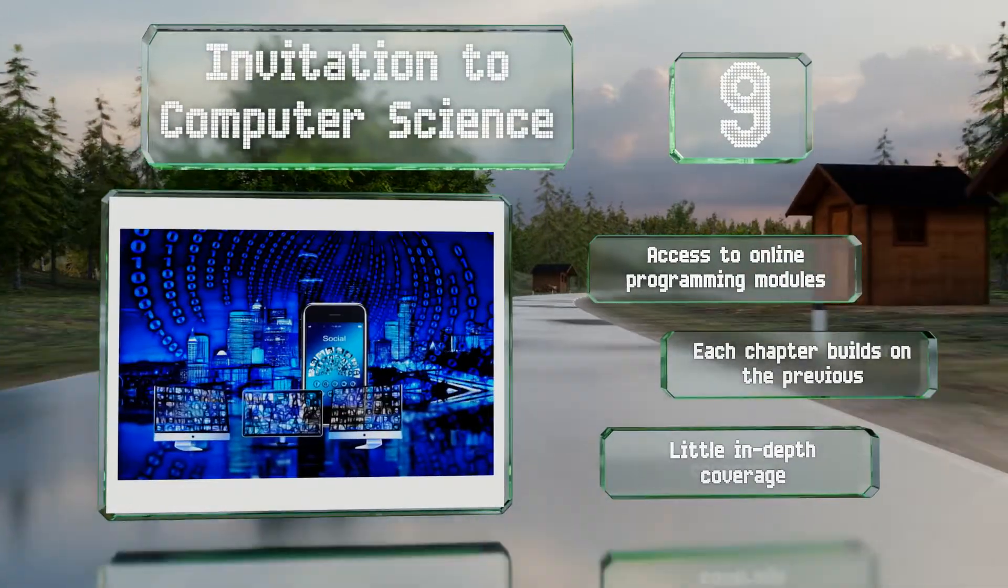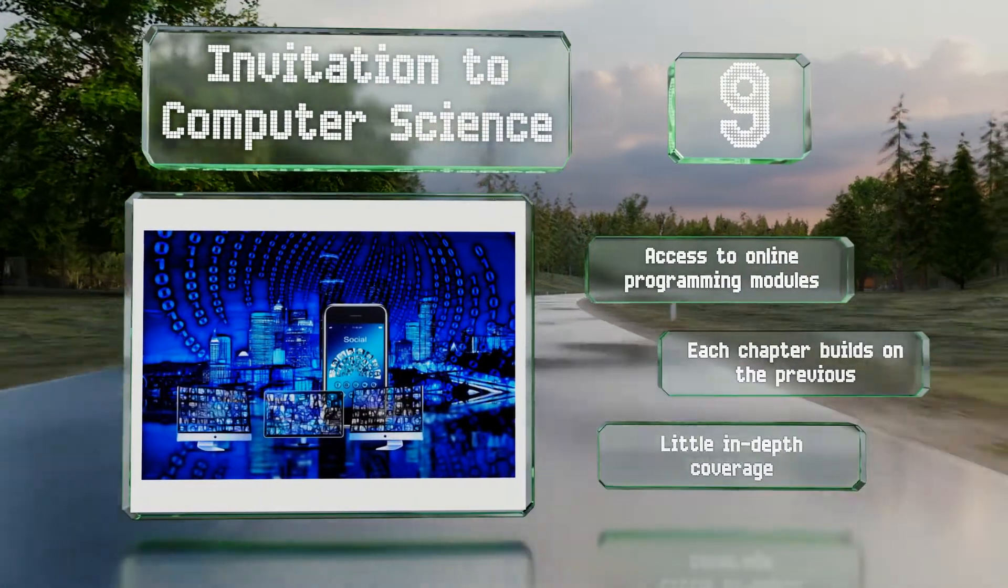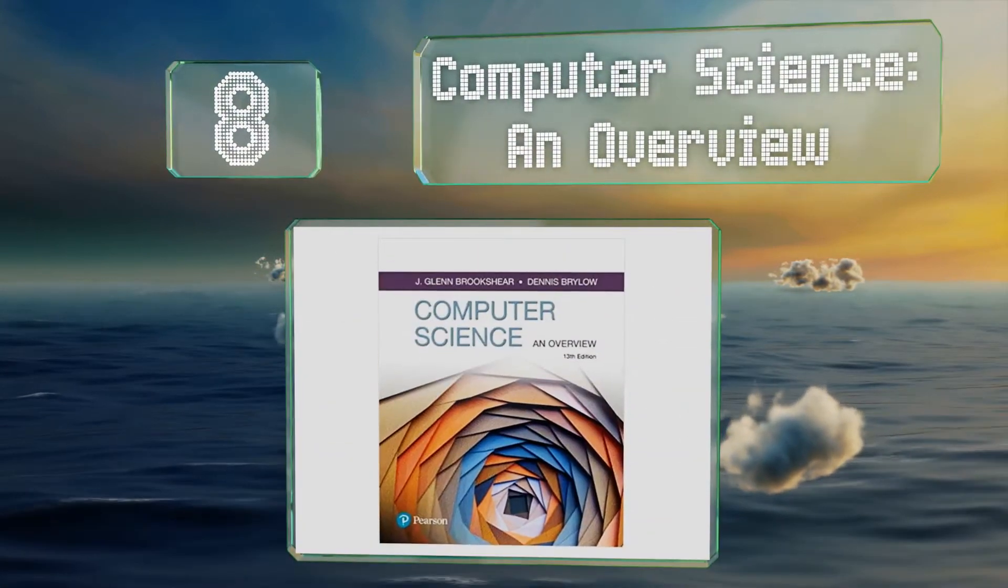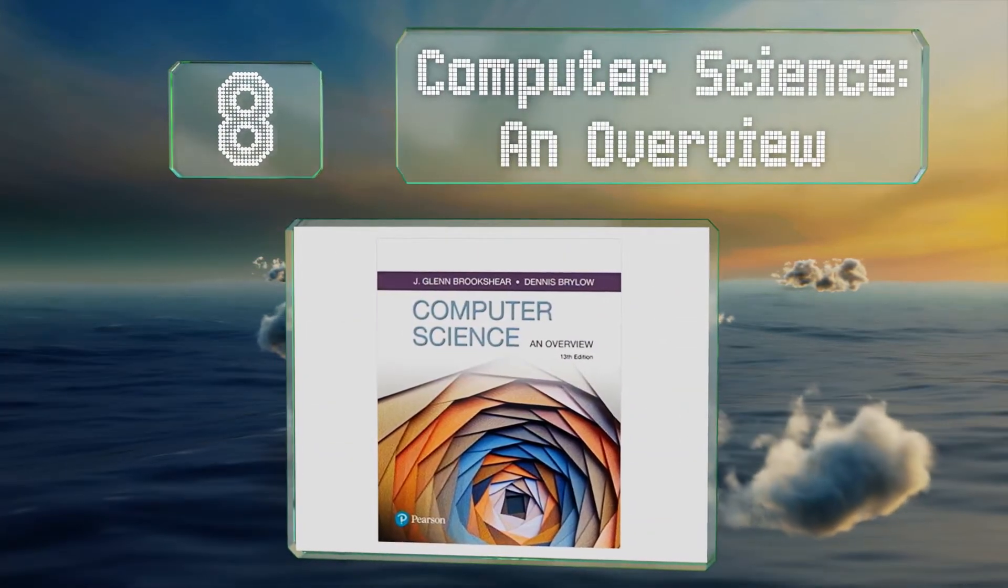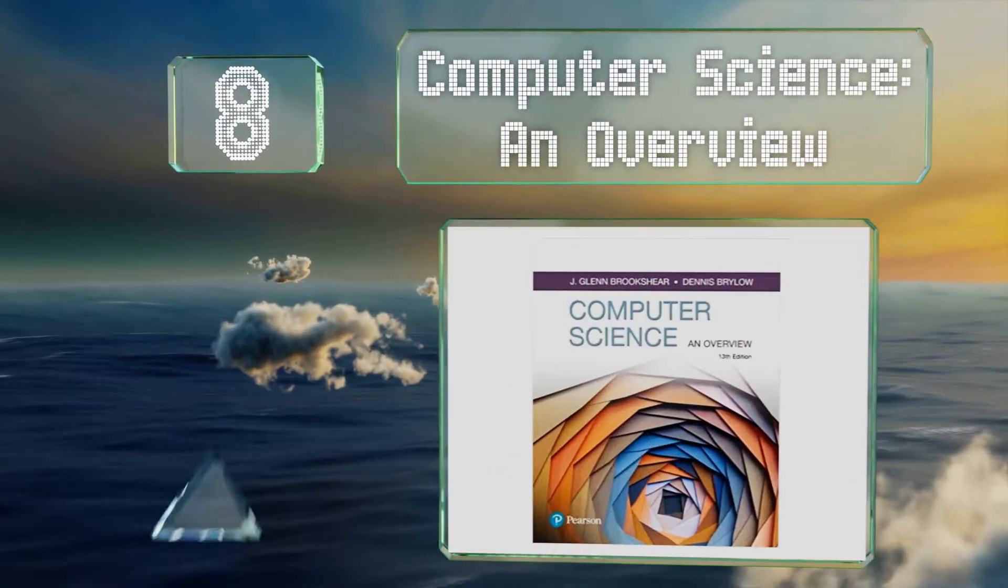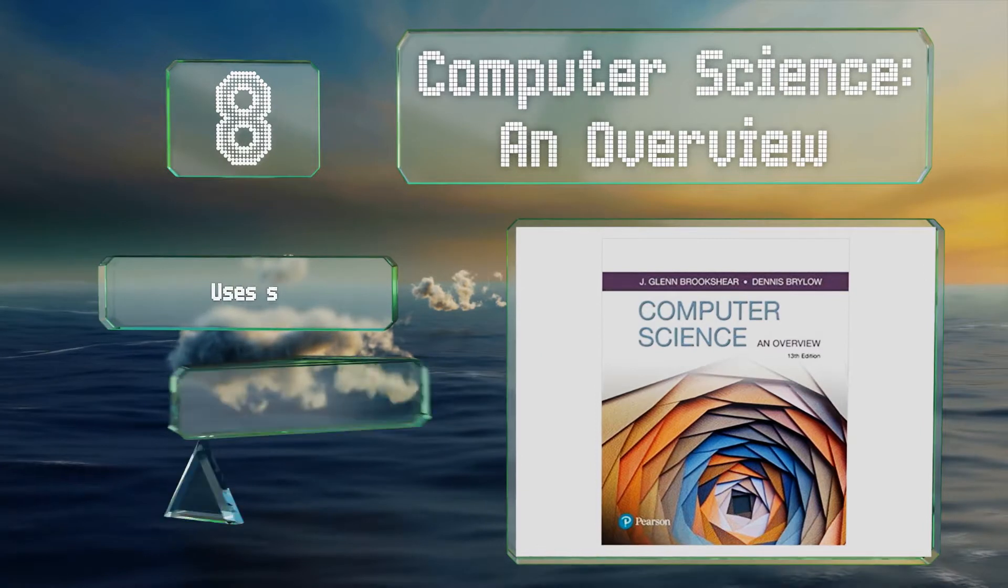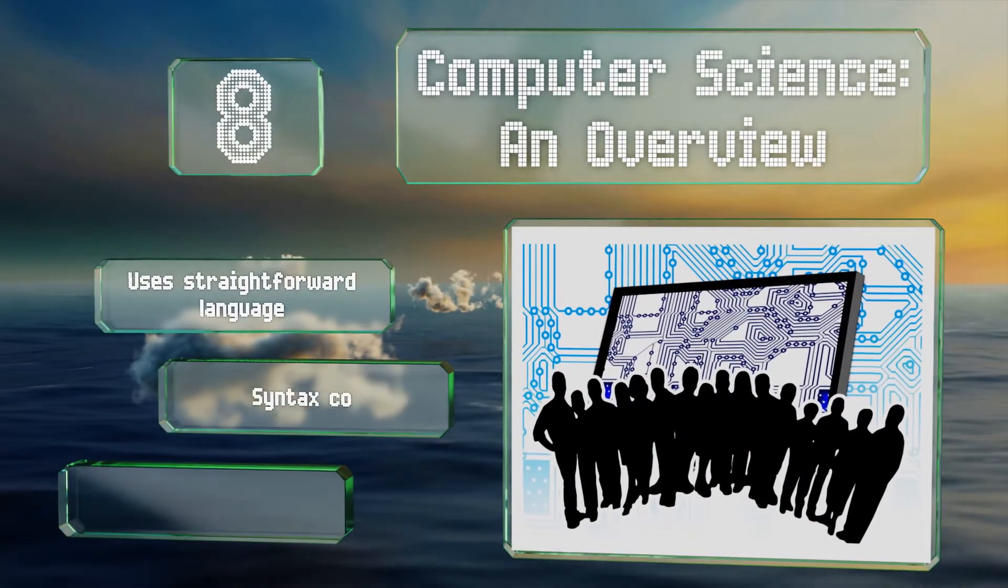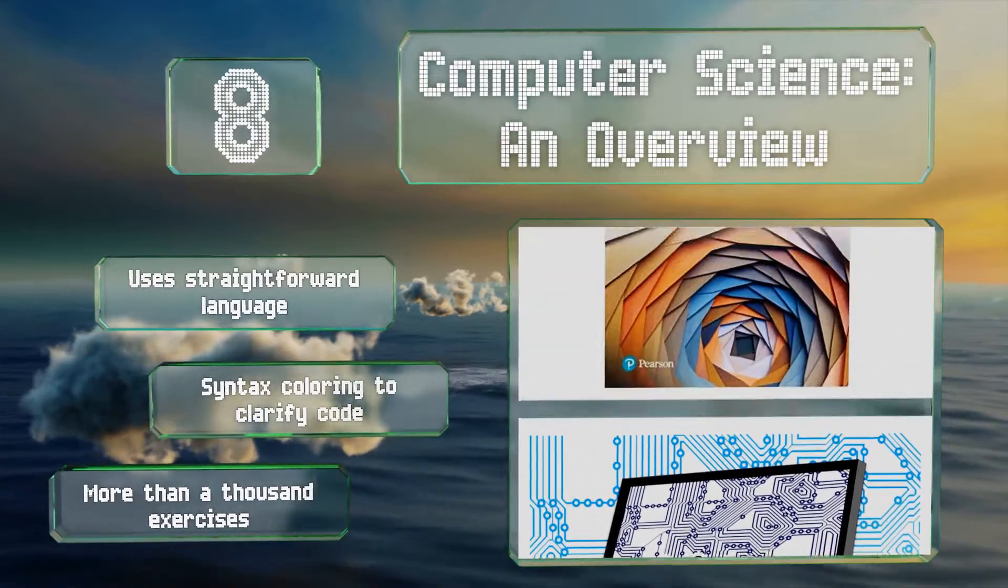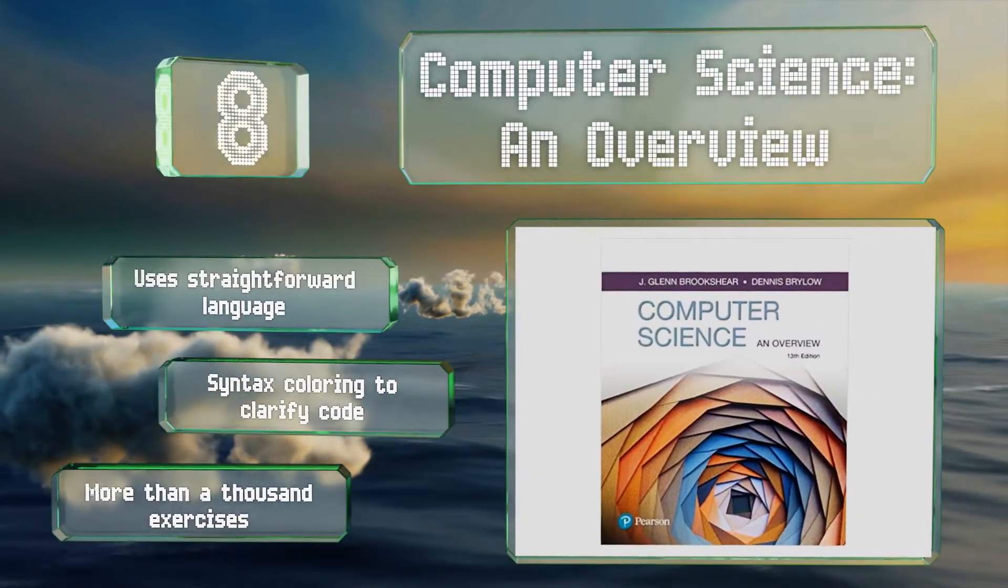Coming in at number 8, as its title suggests, Computer Science: An Overview is an introductory text designed to give readers a comprehensive picture of the field as it exists today. It forgoes the specifics to instead present fundamental concepts like networking and data structures. It uses straightforward language and features syntax coloring to clarify code and more than a thousand exercises.